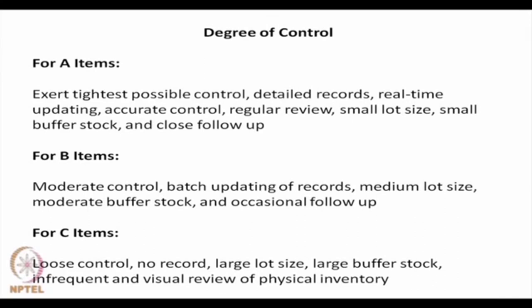This classification has been made on the basis of average annual cost of usage. But it is quite possible that if a particular item is not available, there is a large stock-out cost — such an item is a critical item. It is possible to classify items in terms of the stock-out cost or criticality of items, and it is also possible to consider stock-out cost along with average annual cost of usage to make a classification and then selectively apply controls.